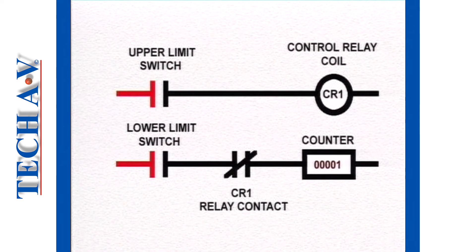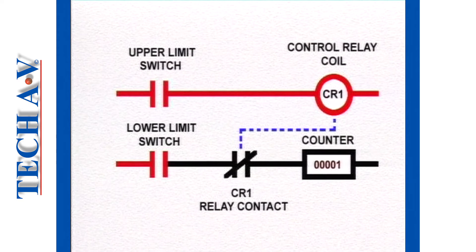But because the upper limit switch closes at the same time, the control relay is energized and its contacts change to their active state, which means that these normally closed contacts open, switching off the power flow to the counter, and so the count is inhibited.